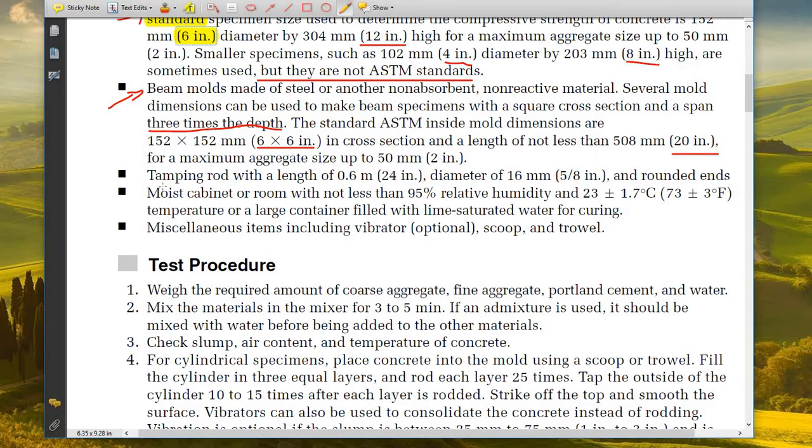We need a tamping rod with a length of almost 24 inches and a diameter of 5/8 inch with rounded ends. We need a moist cabinet or room with not less than 95% relative humidity and 23°C plus or minus 1.7°C temperature.